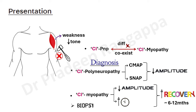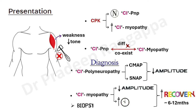Biopsy is the definitive way of establishing the diagnosis of critical illness myopathy. With regards to CPK — creatinine phosphokinase is normal in critical illness polyneuropathy because only nerves are affected, and this is one surrogate that can differentiate between the two. If you are suspecting myopathy, CPK generally tends to be high in critical illness myopathy. These are some of the subtle differences between electrodiagnostic features and CPK levels.